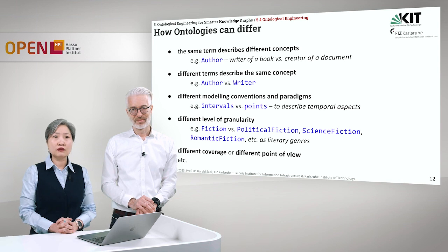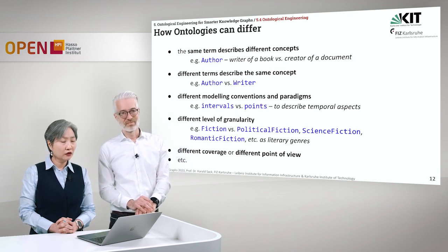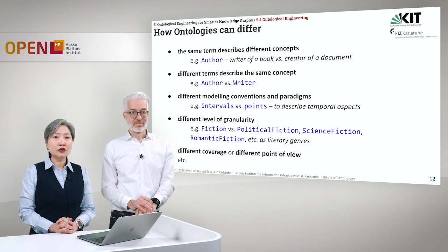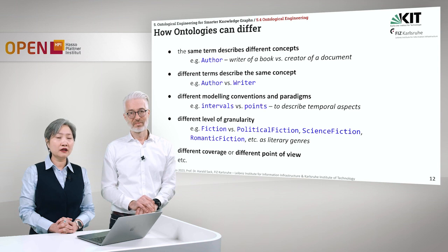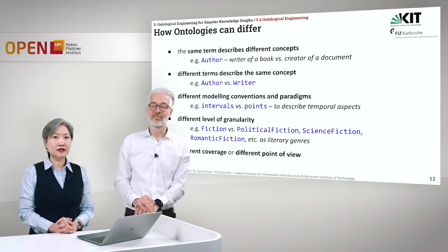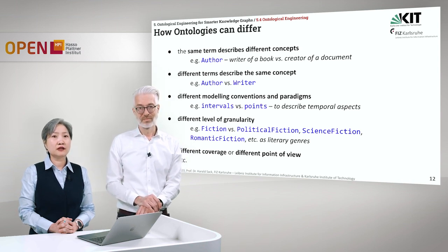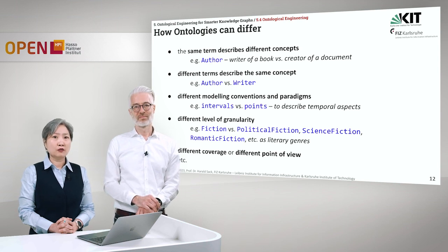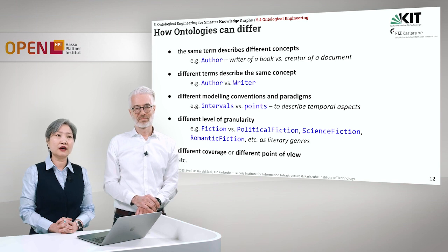The second one is different terms describing the same concept. For example, depending on a domain, you would have "author" in the bibliography domain or "writer" in the scientific publication domain. The third one is different modeling conventions and paradigms — for example, how to describe temporal aspects. You can describe this as an interval specifying a beginning year or end year, or as a specific point in time. There are also different levels of granularity, which relates to the class hierarchy. For example, fiction is very general, but there are different types: political fiction, science fiction, romantic fiction, and every other literary genre under fiction. Level of granularity also differs particularly when discussing tasks.